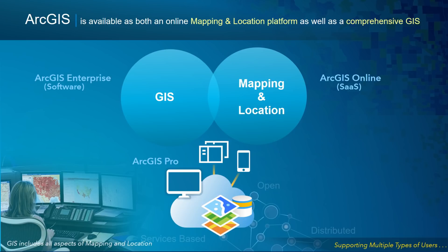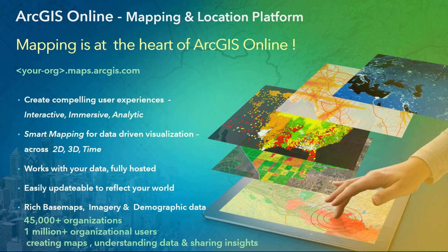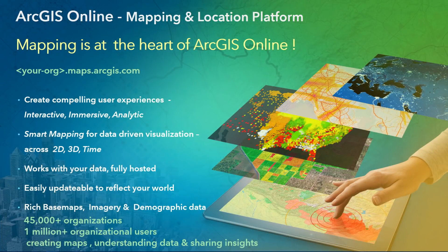ArcGIS Online is a worldwide mapping and location platform used by people all over the world. Mapping is at the heart of ArcGIS Online. It allows you to create compelling user experiences that are interactive, immersive, and analytic. It includes smart mapping for data-driven visualization, and it works with your data — fully hosted, updatable whenever you need. It has rich base maps, imagery, demographic data, and of course geocoding, routing, and geo-enrichment. So it's a comprehensive, widely available mapping platform.